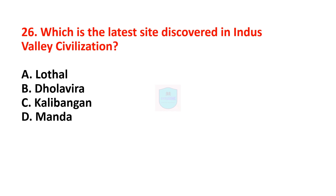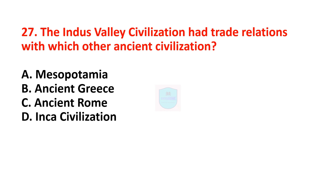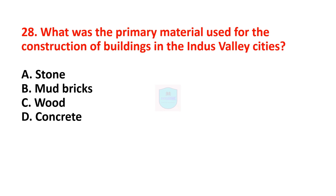Next question: which is the latest site discovered in the Indus Valley Civilization? Correct answer is Dholavira. Dholavira is the latest site discovered. Remember, Dholavira is the 40th UNESCO World Heritage Site from India. Next question: the Indus Valley Civilization had great relations with which other civilization? Correct answer is Mesopotamia. Next question: what was the primary material used for construction of buildings? Correct answer is mud bricks.